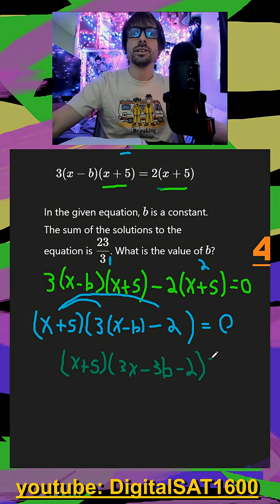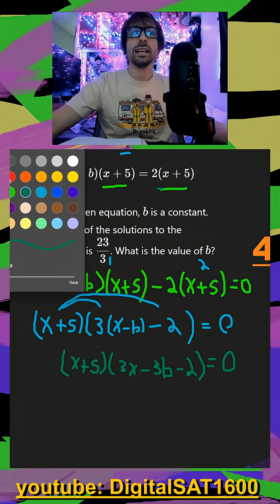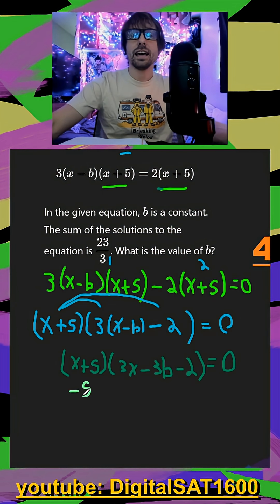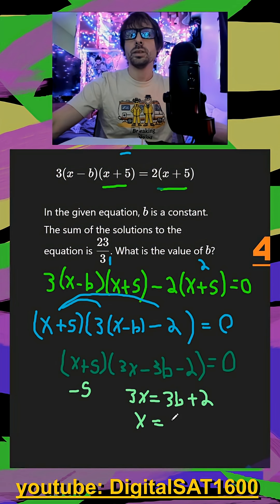What we can do now is since both of these are equal to zero, we can get both of our solutions, both of our intercepts here. So I can say, when x is negative five, we get zero here. This one's going to be three x is equal to three b plus two, I just added them both to the other side. So our x over here is going to be b plus two over three.